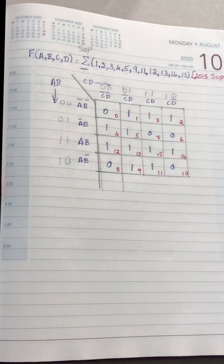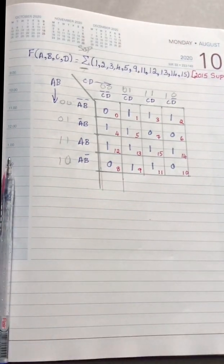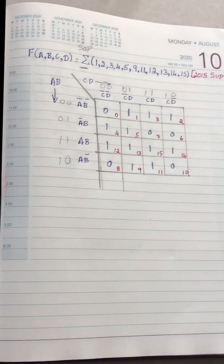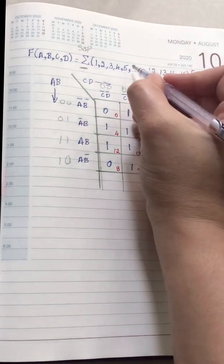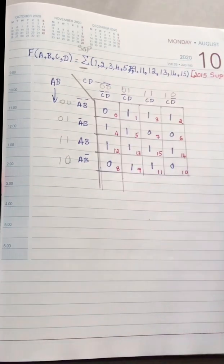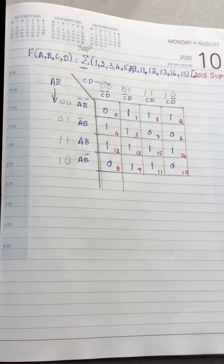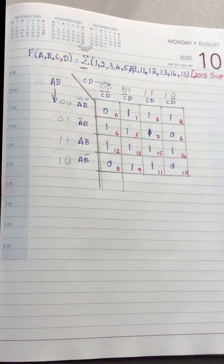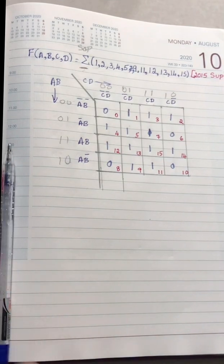We have finished entering the values. There is a correction in the question — after 9, there is also 7, so we place a 1 in cell 7 as well. Now we proceed to grouping.